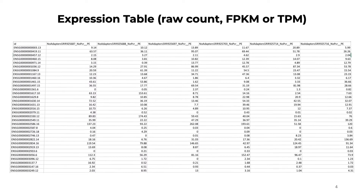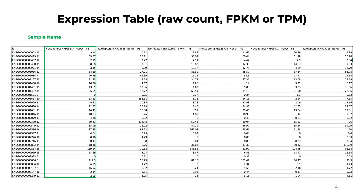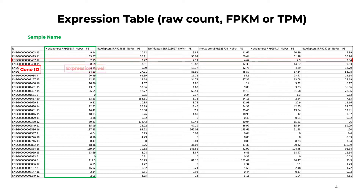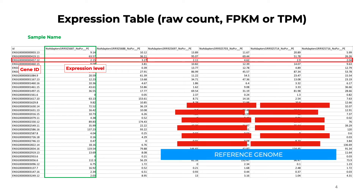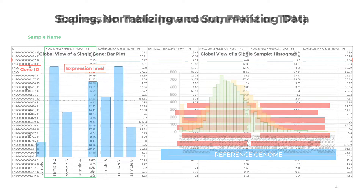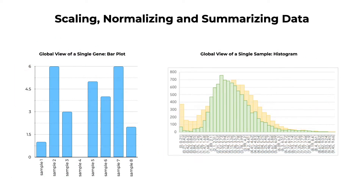Remember that we are working with a table of expression where columns are samples, rows are genes, and the numbers in each cell can be raw or normalized counts of reads mapped to a specific region on the reference genome. In the previous session, we discussed how such data can be explored visually, looking at individual gene expression patterns across samples like a bar plot, or by summarizing gene expression for a single sample using global properties like the mean, median, maximum, minimum, or distribution, and how we can compare these global attributes between samples.